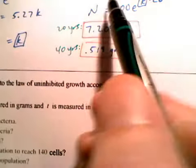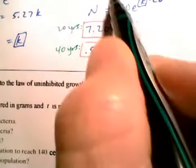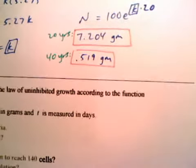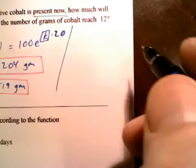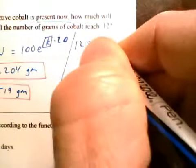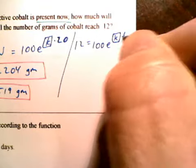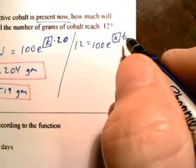How long from the present time will the number of grams of cobalt reach 12? Well, we're going to put a 12. So to answer that, 12 equals, we're starting with 100, e to the K, we already have that. And we're going to solve for T.